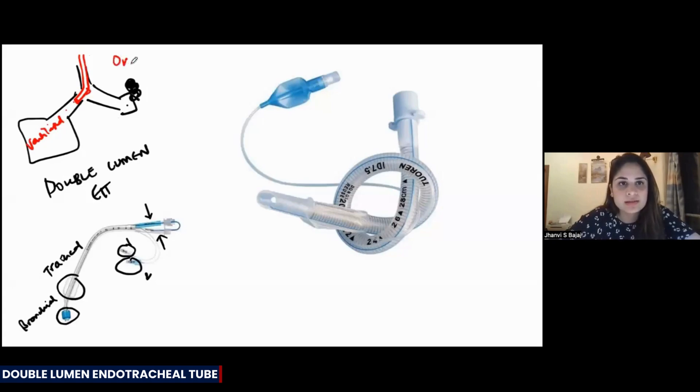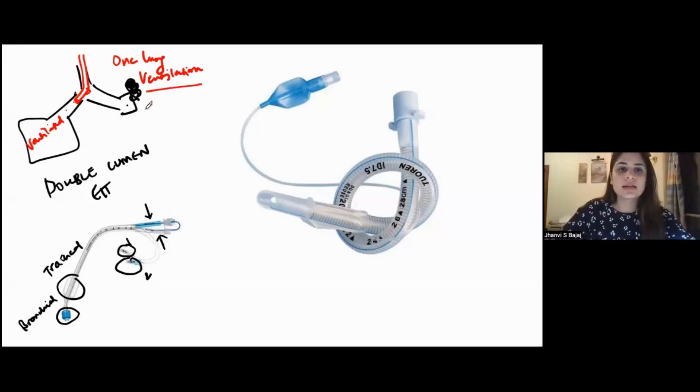This is called one lung ventilation. In your exam, they can ask you double lumen tube use. Use can be for one lung ventilation or they can also ask for which kind of surgeries. So for thoracic surgeries, we do one lung ventilation.